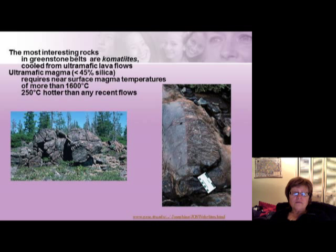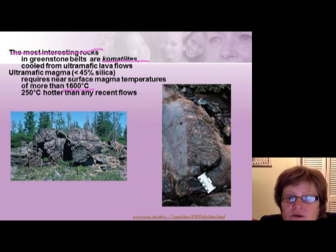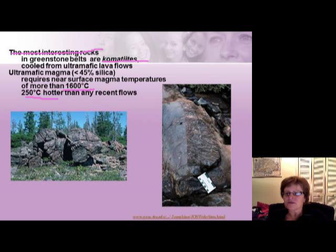This picture shows pillow lava from a greenstone belt — you can clearly see the pillow-shaped basalt, confirming these lavas erupted underwater, so there was definitely water present. As mentioned, we did have ultramafic lava at this time. These rocks are called komatiites — they cooled from ultramafic lava flows, have less than 35–45% silica, and required a near-surface temperature of at least 1600 degrees Celsius — about 250 degrees hotter than the hottest magma we know of today.